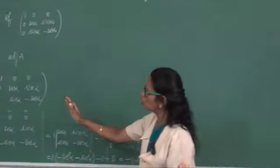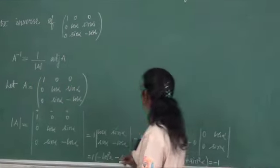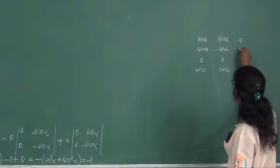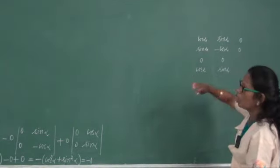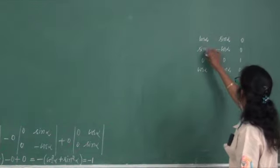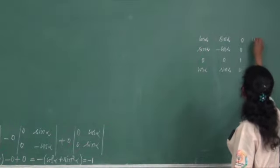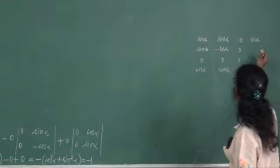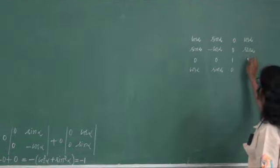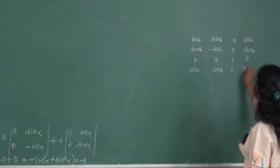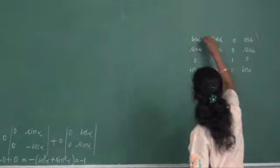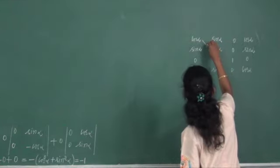Then move towards left: that is 0, below 0 is again 0, above 0 is 1. Now the first column what you wrote — repeat at the end: sin alpha, 0, cos alpha.